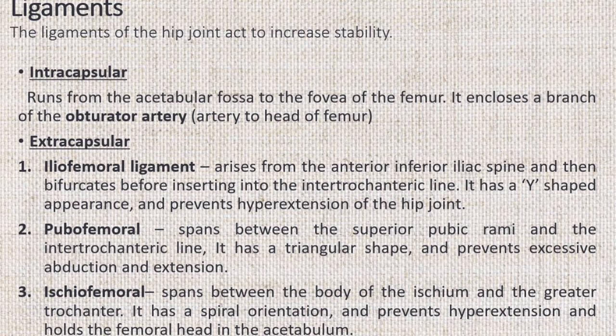There are three main extracapsular ligaments continuous with the outer surface of the hip joint capsule. The iliofemoral ligament arises from the anterior inferior iliac spine and bifurcates before inserting into the intertrochanteric line of the femur. It has a Y-shaped appearance and prevents hyperextension of the hip joint. It is the strongest of the three ligaments. The pubofemoral ligament spans between the superior pubic rami and the intertrochanteric line, reinforcing the capsule anteriorly and inferiorly, with a triangular shape preventing excessive abduction and extension. The ischiofemoral ligament spans between the body of the ischium and the greater trochanter, reinforcing the capsule posteriorly, with a spiral orientation preventing hyperextension and holding the femoral head in the acetabulum.